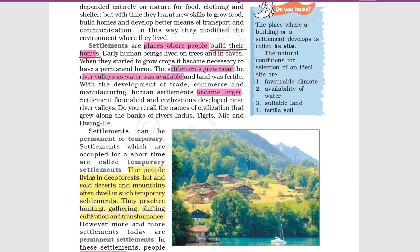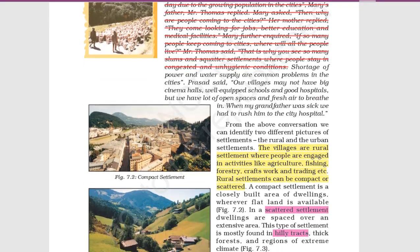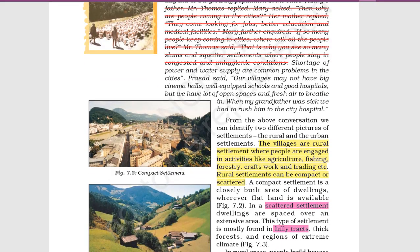Settlements are of two types: permanent and temporary. Hunters and gatherers using slash-and-burn type of land who move from place to place are called temporary settlements. If you have a permanent house where you always stay, that is a permanent settlement. Villages are rural settlements where most people are engaged in primary activities like agriculture, fishing, forestry, crafts, and trading.